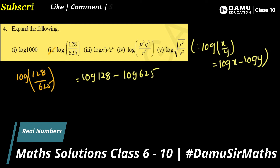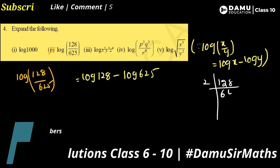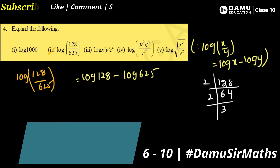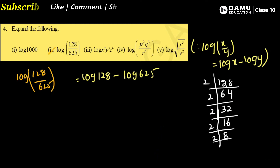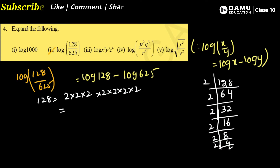Now expand 128 by prime factorization. Dividing by 2 repeatedly, we count seven 2s. So 128 = 2⁷.